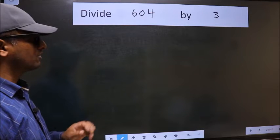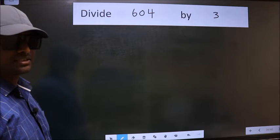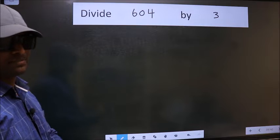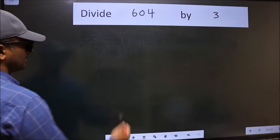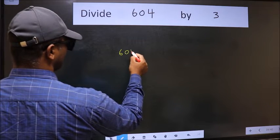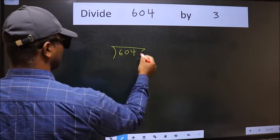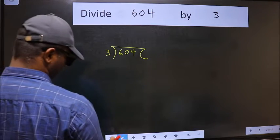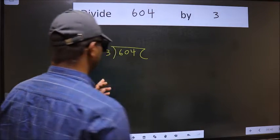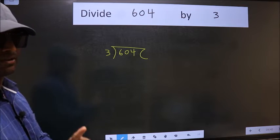Divide 604 by 3. To do this division, we should frame it in this way. 604 and 3 here. This is your step 1.